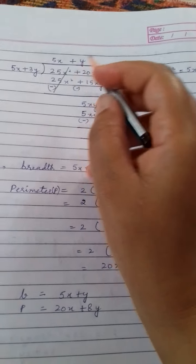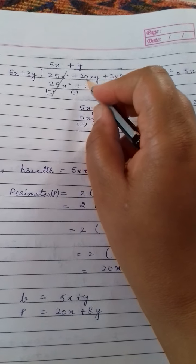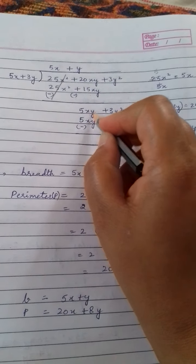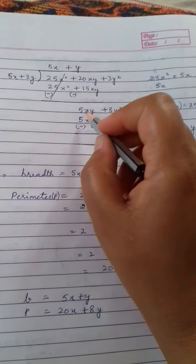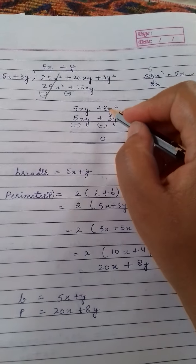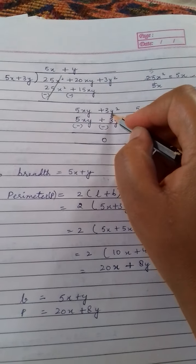Plus minus cancel. And plus minus minus, 20 minus 15, 5xy. 20 is greater, so plus, it is positive. Now plus 3y square will come down.